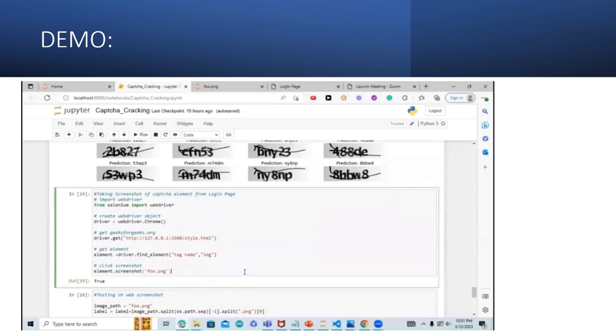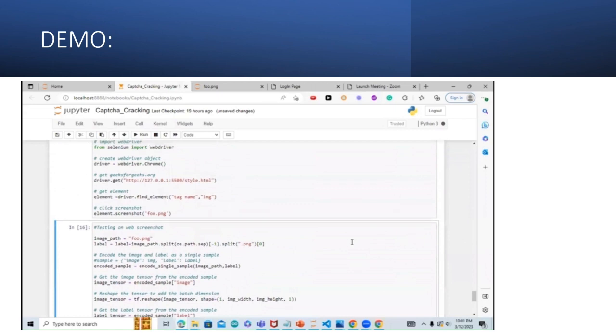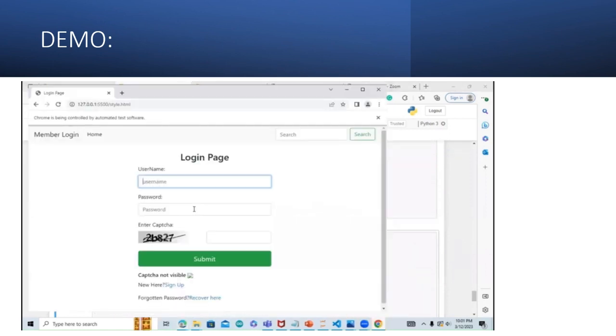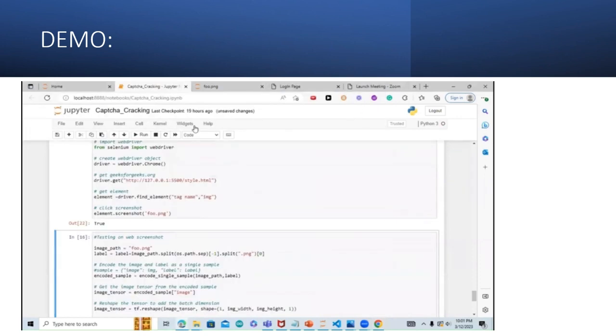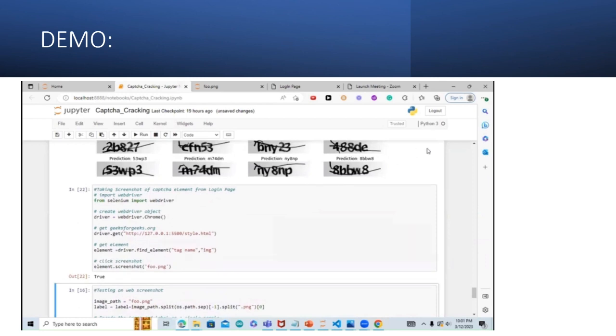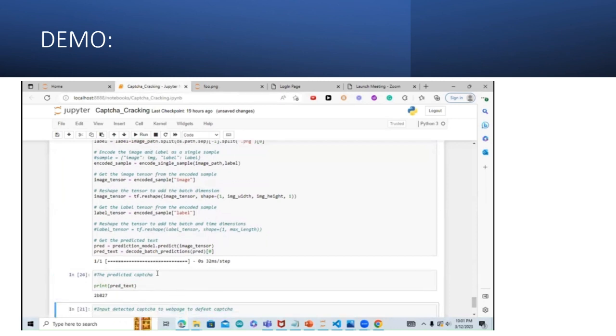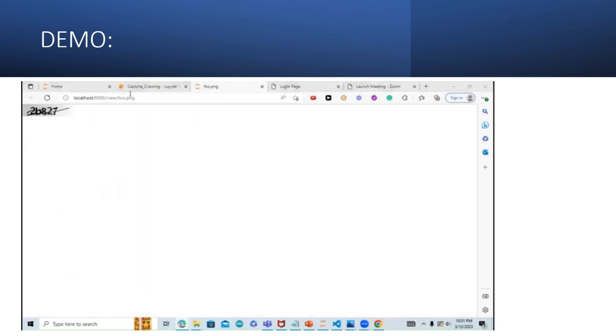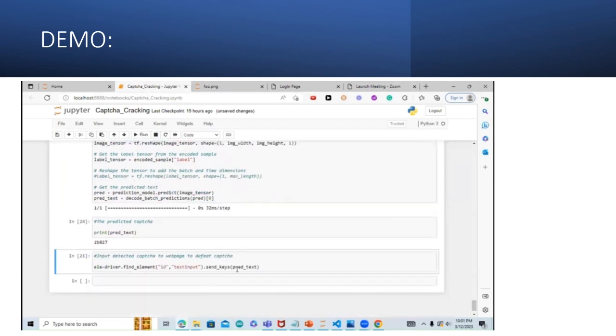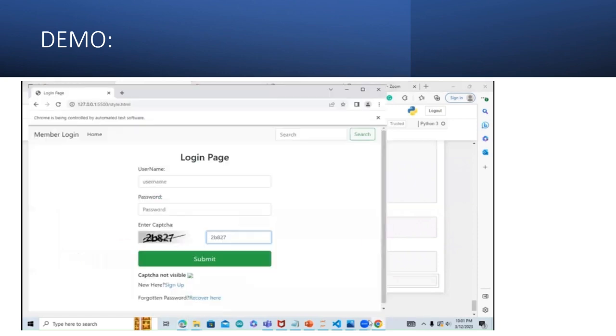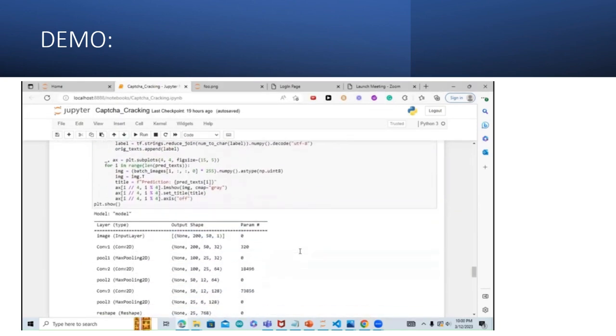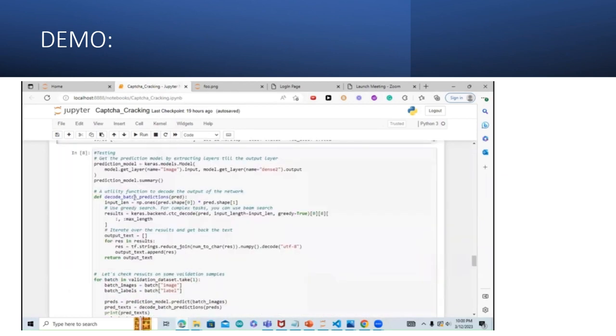Now we will extend our work and predict the CAPTCHA on the website. So first we take the screenshot of the CAPTCHA from the website using python and selenium. This is the screenshot taken. Now we will input this screenshot to the model and see what it predicts. It predicts 2b8 to 7. We can observe that even the CAPTCHA is 2b8 to 7. Hence it has accurately predicted the model. Now we will be inputting this to our login page. So this ends the demo and shows how the CAPTCHA cracking system works.